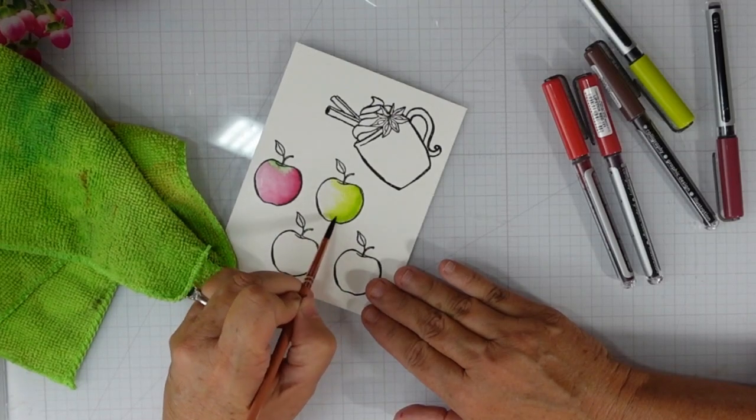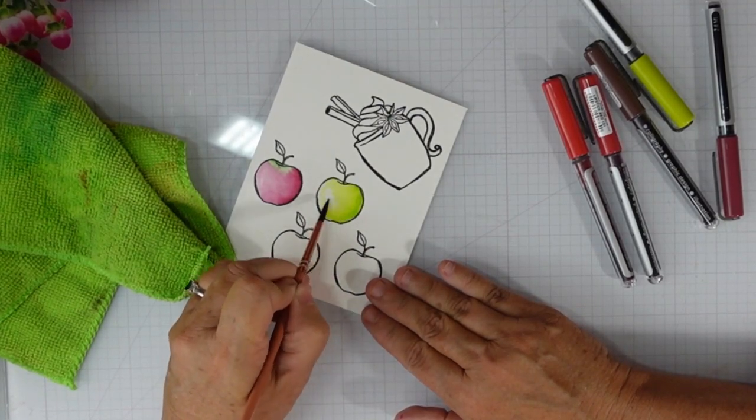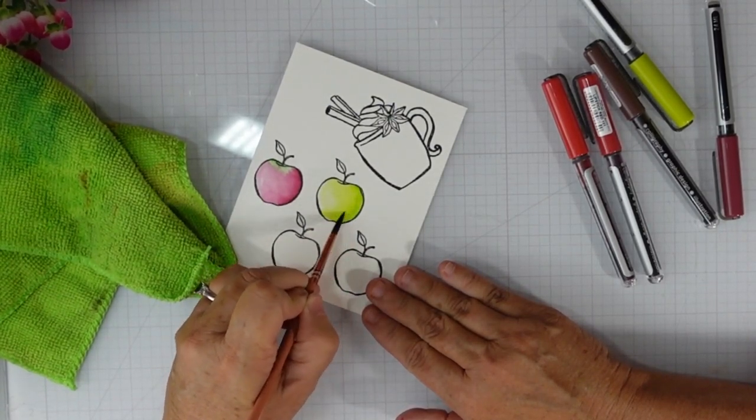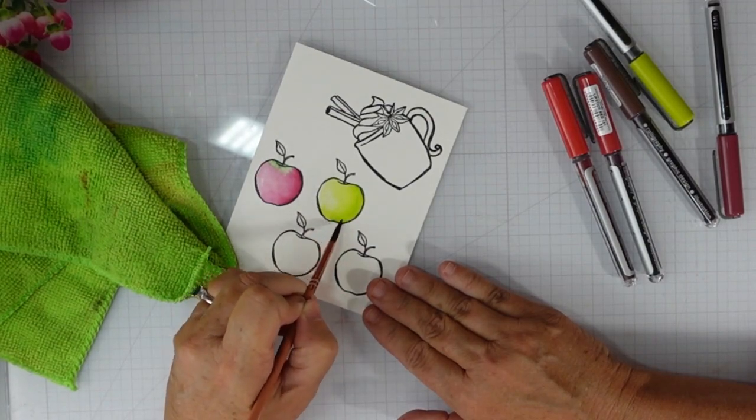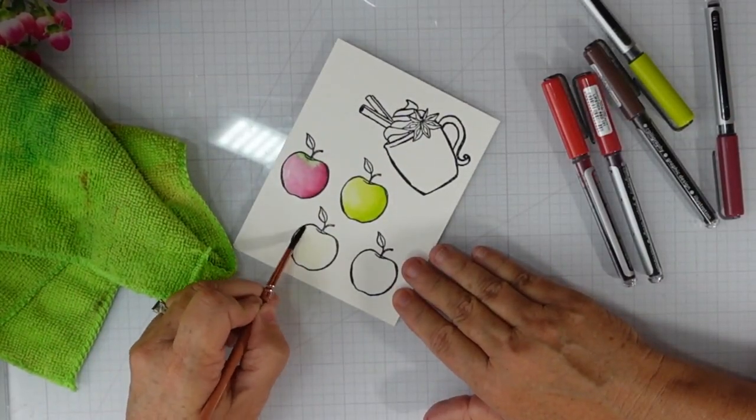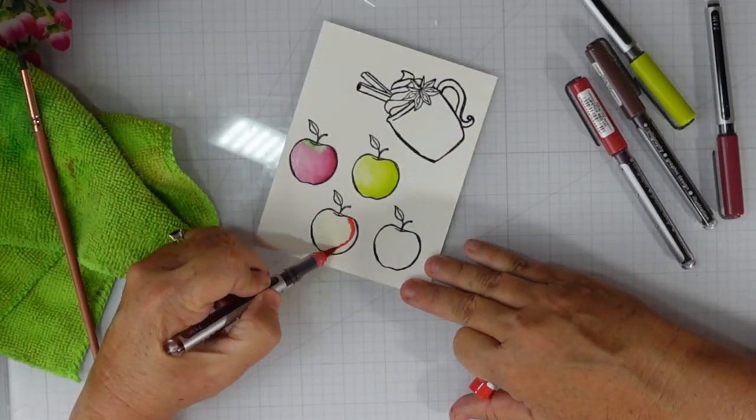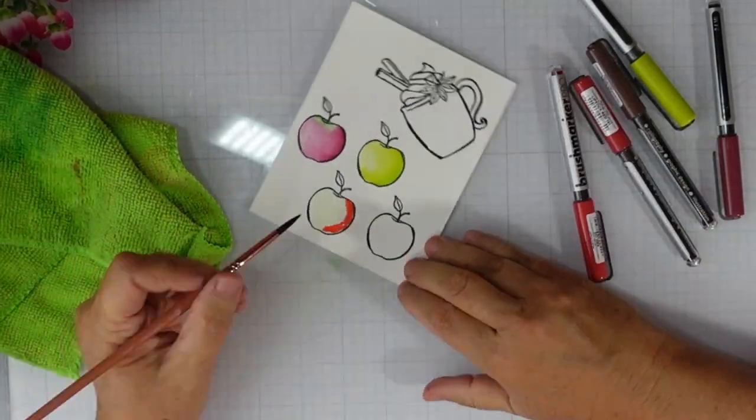Then I'm going to add water that's on my brush and just stroke that out throughout the apple. I do leave white space, so when I go over it a second or third time it's going to fill in those areas and give a little bit of a shine.